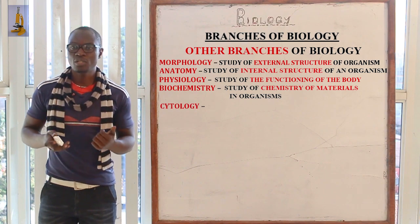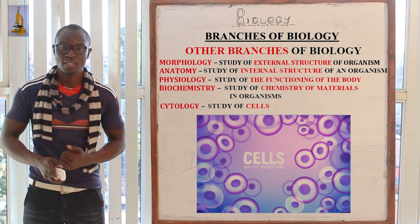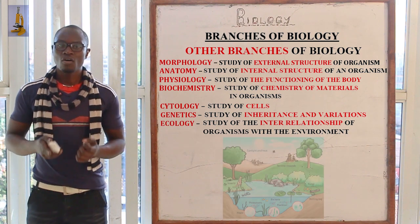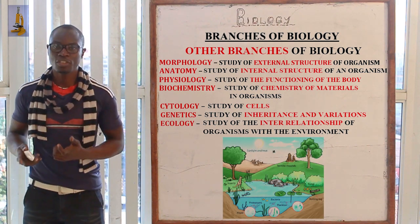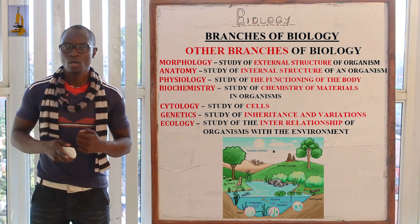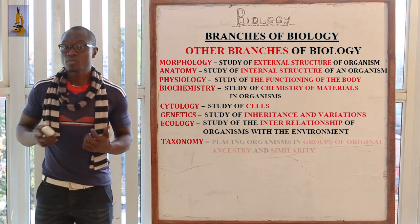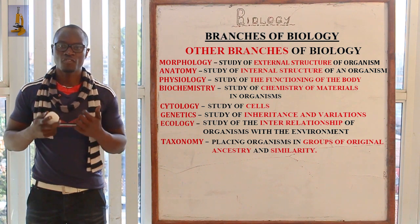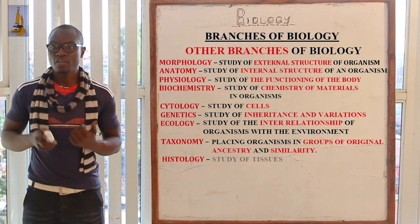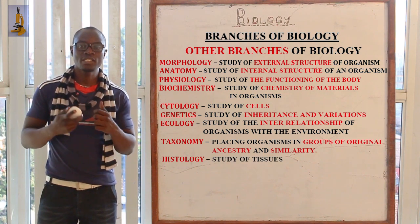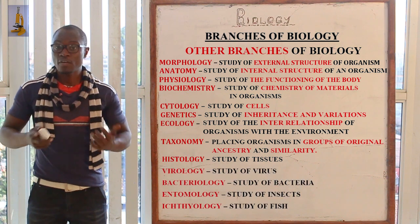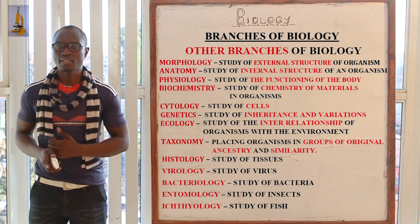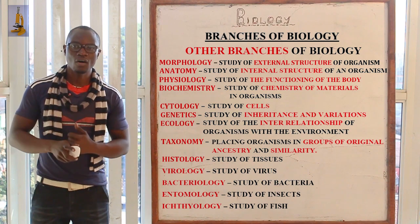We also have cytology, which is the study of cells; genetics, the study of inheritance and variation; ecology, the study of living things and their interrelationship with the environment. We also have taxonomy — the placing of organisms in groups based on origin or ancestry — histology, the study of different tissues; virology, the study of viruses; bacteriology, the study of bacteria; entomology, the study of insects; and ichthyology, the study of fish.